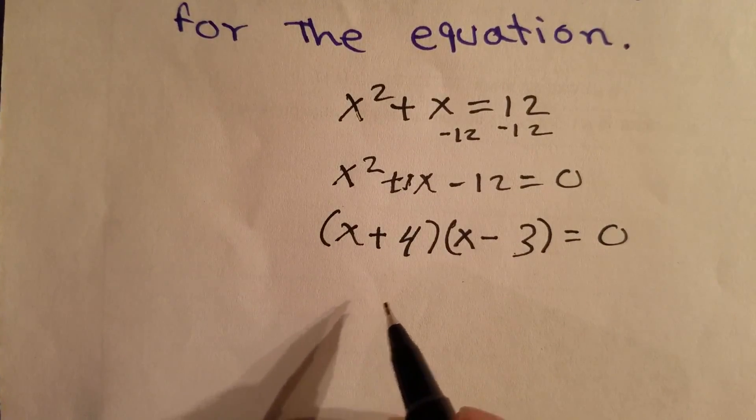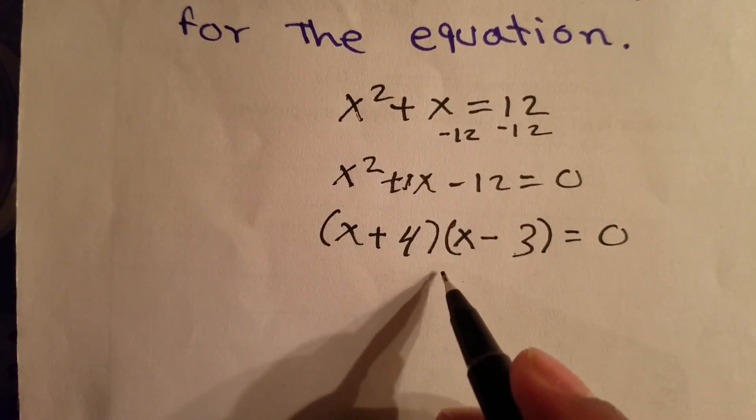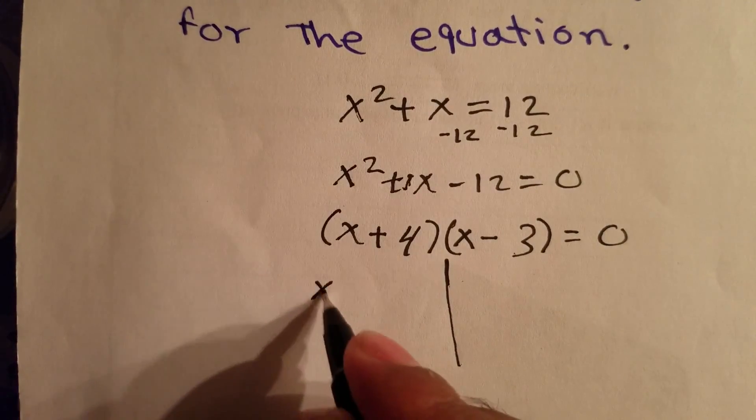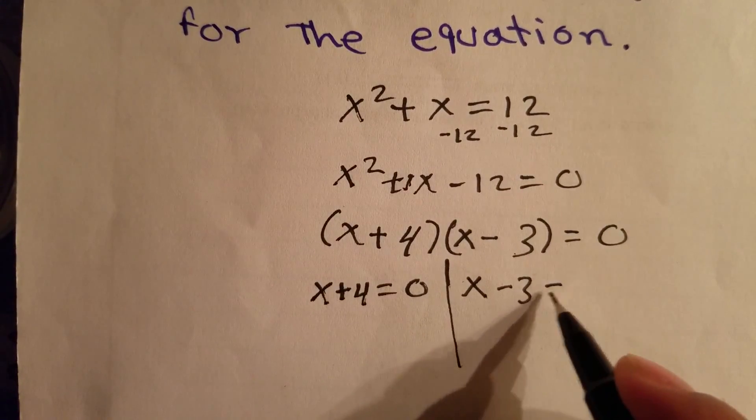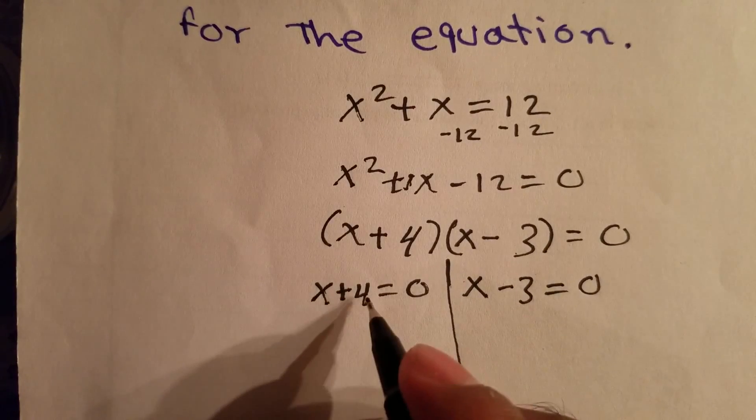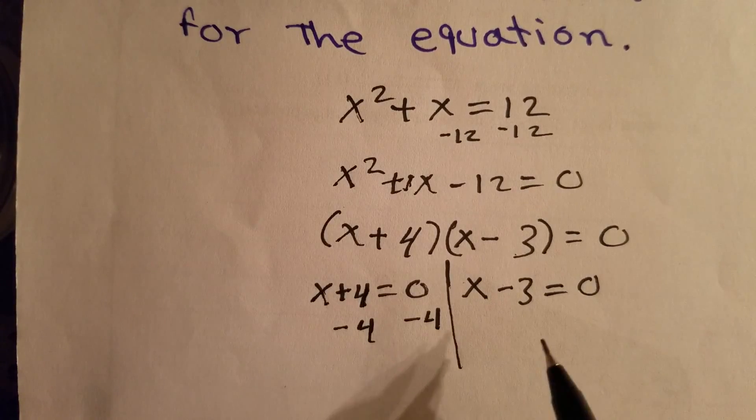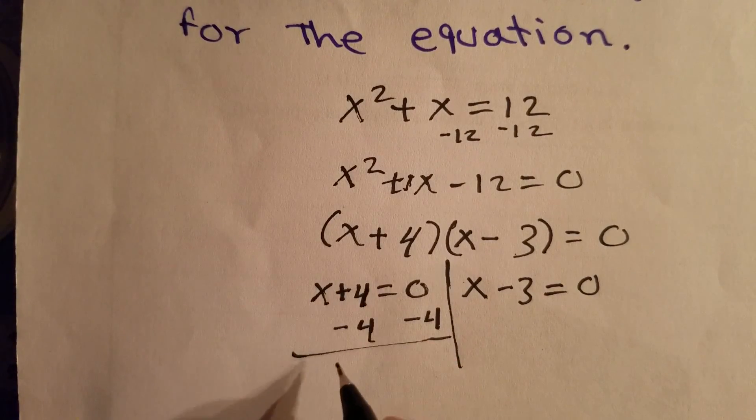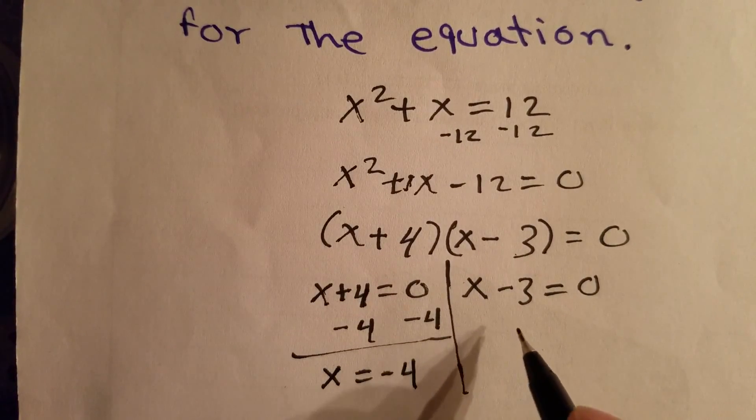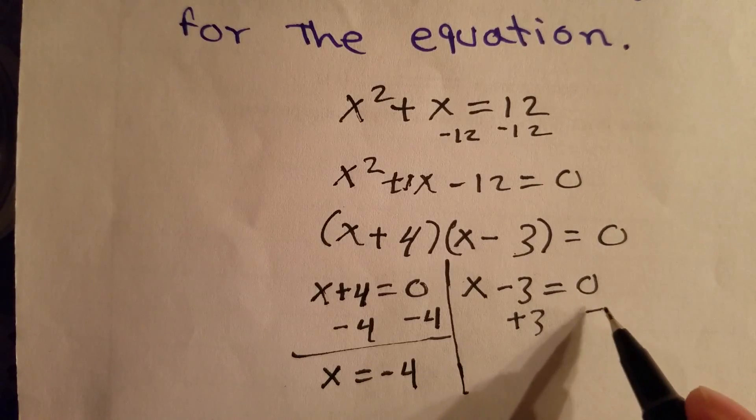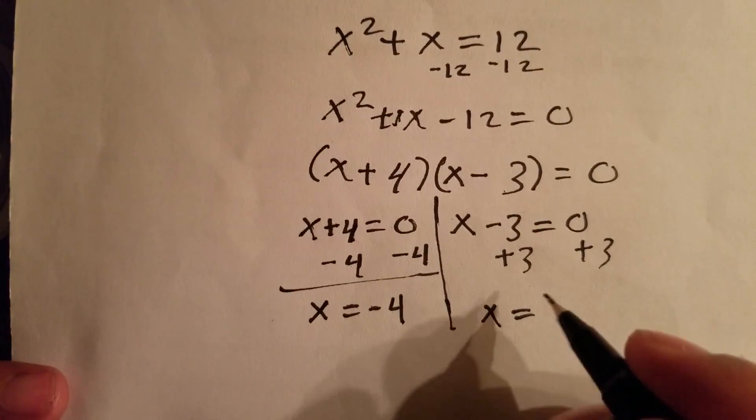Now it is simple because if one of them is equal to 0, this equals 0. We can set both of them: x + 4 = 0 and x - 3 = 0. So we can solve for x right now. We subtract 4 on this side, subtract 4 on this side, so x = -4. And this is going to be add 3 on this side, add 3 on this side, so x = 3.